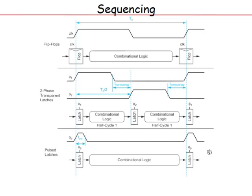For a pulsed latch, the setup time is defined with respect to the negative edge rather than the positive edge. Contamination delay is the earliest time the output starts changing after the input changes. Propagation delay is the longest delay from input change to output settling. For a flop, CCQ is the contamination delay from clock to Q, and PCQ is the propagation delay from clock to Q.